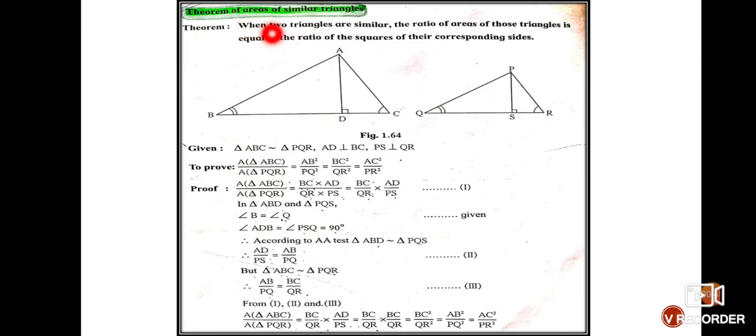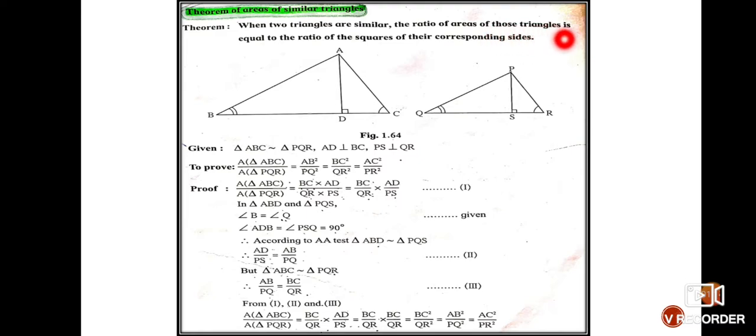Now, the beginning of the statement says 'when two triangles are similar,' that means triangle ABC and triangle PQR are similar. And if you look at the diagram, AD is perpendicular to BC and PS is perpendicular to QR — that is what is given to us. What are we supposed to prove? If the two triangles are similar, then the ratio of areas of those triangles is equal to the ratio of the square of their corresponding sides.